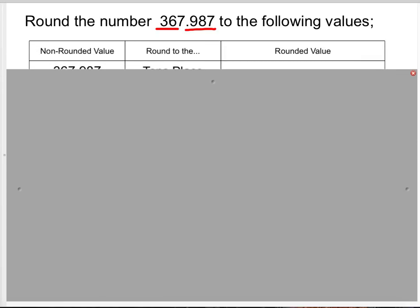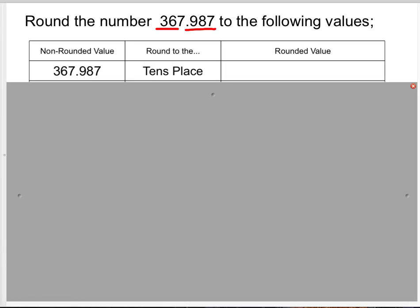They want you to round the number 367 and 987 thousandths to several place values. If you round it to the nearest tens place, you're rounding where the six is. Six looks at seven; seven tells six to round up to seven. Then you build your number: three stays, six rounds to seven, and everything after turns to zero. So 367.987 rounds to 370.